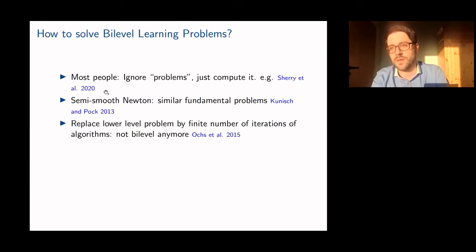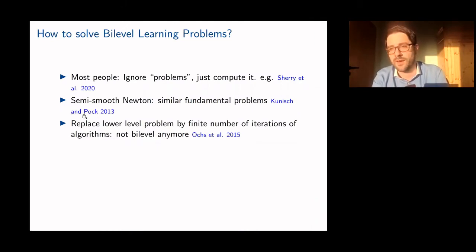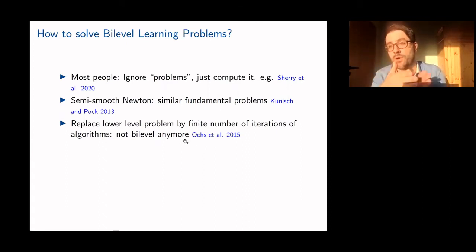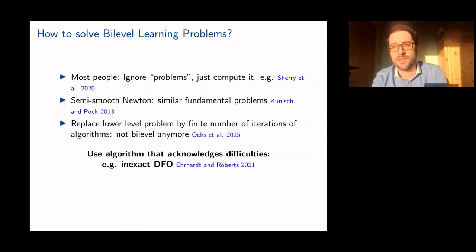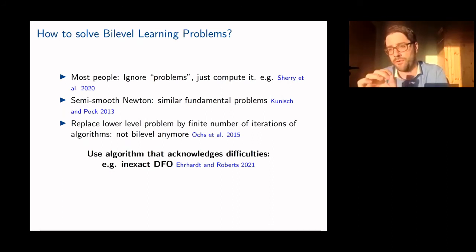For non-smooth lower-level problems, Kunisch and Pock developed a semi-smooth Newton method to solve the bi-level problem, and another strategy by Ochs, Pock, and co-workers is to replace the lower-level problem with a number of iterations of a lower-level solver and differentiate through the solver. In this work, we would like to go a different route: solve the original bi-level problem using an algorithm that explicitly acknowledges these difficulties — one that makes use of the fact that all computations can only ever be inexact, but still has convergence properties.